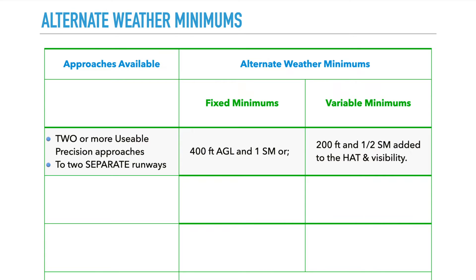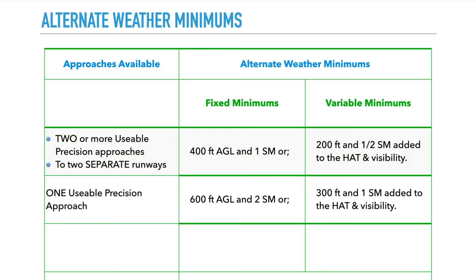If you have two or more usable precision approaches to two separate runways, you must have the weather forecast based on the TAF to be 400 feet AGL and one statute mile, or it must be 200 feet and a half statute mile added to the height above touchdown zone and visibility. The next case is if you have one usable precision approach at that airport — the minimums are slightly higher. Your TAF must show at least 600 feet AGL and two statute miles, or 300 feet and one mile added to the HAT and visibility.